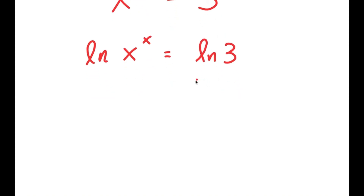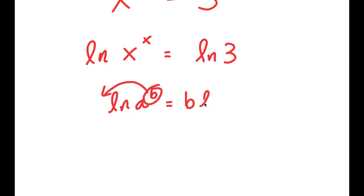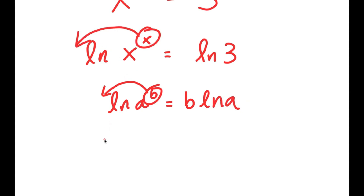Now, an important property of logarithms is that if I have something in the form ln of a to the power of b, I can move this exponent b to the front, so this turns into b times ln a. So in this case, I have ln of x to the power of x, and I can move x to the front, so I get x times ln x is equal to ln 3.